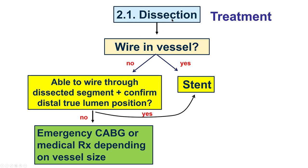When a dissection occurs, the first question is whether we have a guide wire in the vessel. If we do, treatment is fairly simple by stent delivery. But if we don't, we have to advance a guide wire into the distal true lumen, confirm the wire is in the true lumen, and then place a stent. If we cannot, the options are to send the patient for emergency coronary bypass or to do medical therapy alone, depending on vessel size and the patient's symptoms.